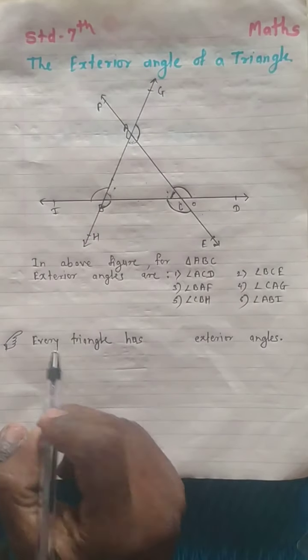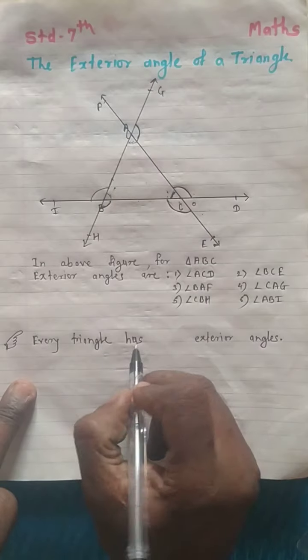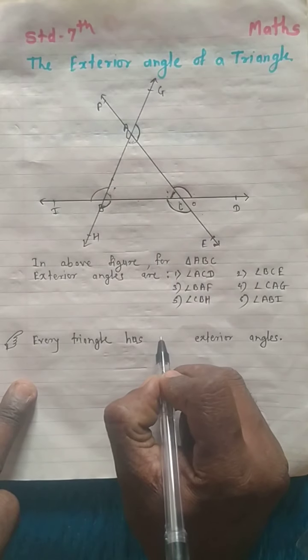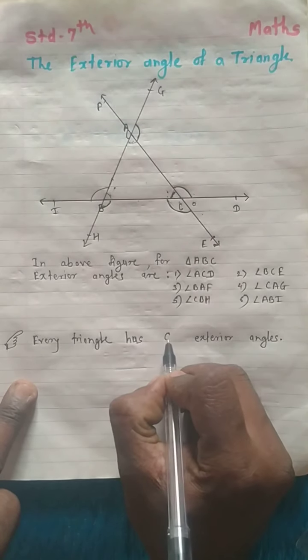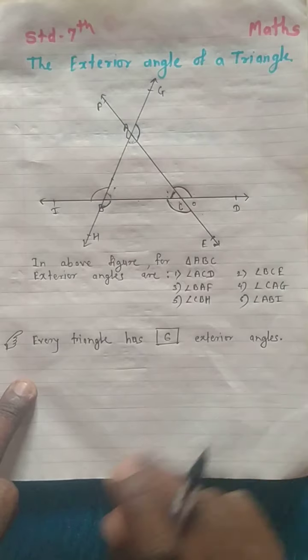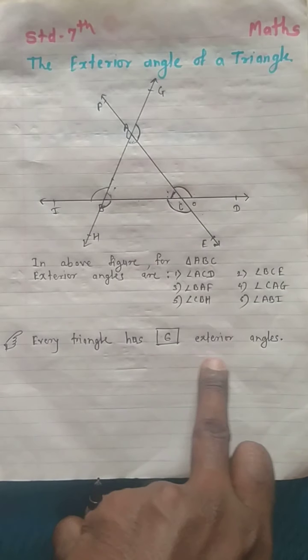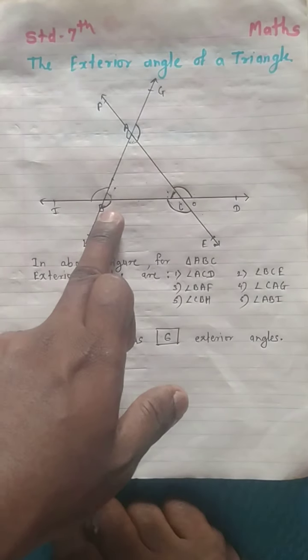Two exterior angles for each of three interior angles: 2 times 3 equals six. So for each triangle there are six exterior angles. Every triangle has six exterior angles.